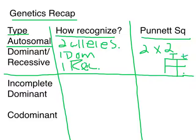Here's a big T, little t on top, and little t, little t on the side — just a basic two by two Punnett Square. So whenever the problem tells you it's autosomal dominant or autosomal recessive, it might say something like it has two alleles — tall and short — and the tall is dominant.